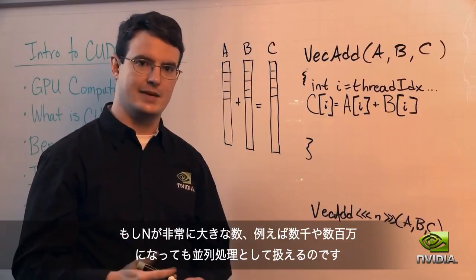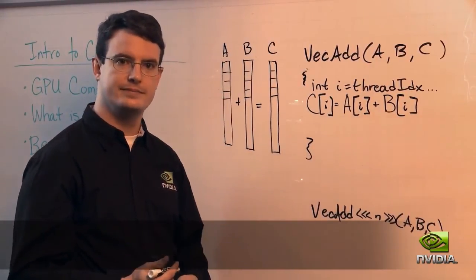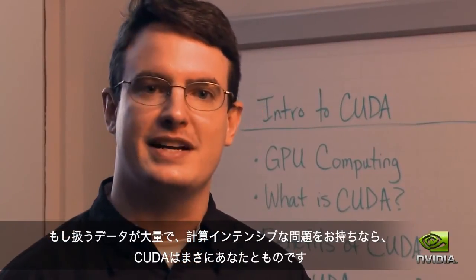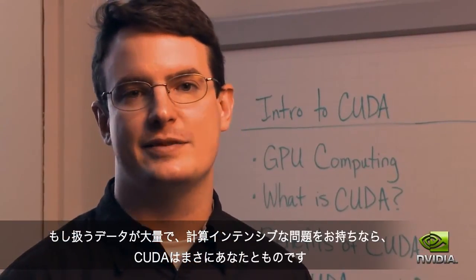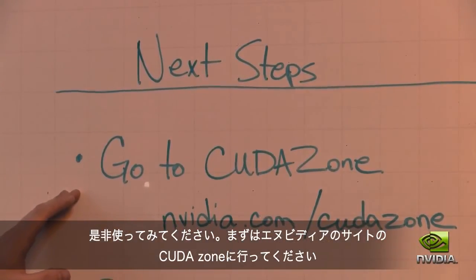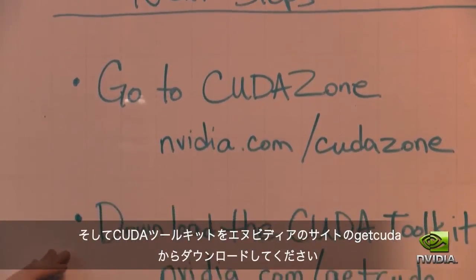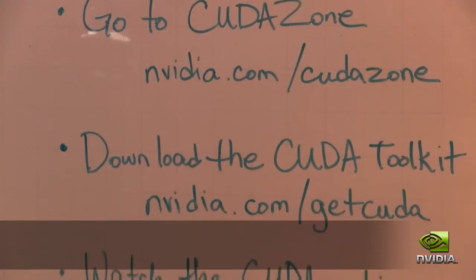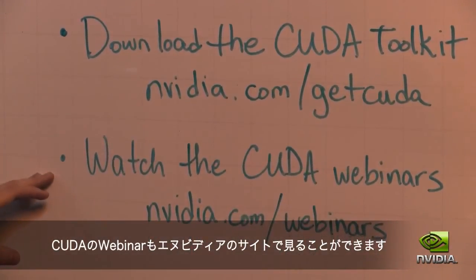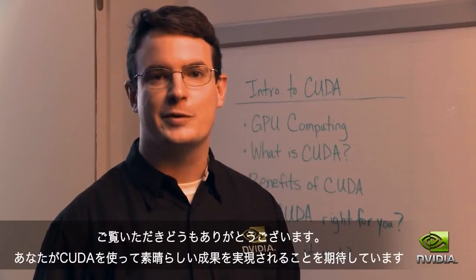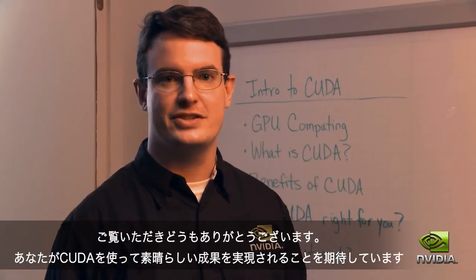In conclusion, CUDA is all about high performance. If you have a lot of data to process, if you have a compute-intensive problem, CUDA is for you. Here's how you can get started: go to CUDAZone at nvidia.com/CUDAZone, download the CUDA toolkit at nvidia.com/getCUDA, and watch the CUDA webinars at nvidia.com/webinars. Thanks for watching, and I look forward to seeing the great things you do with CUDA.